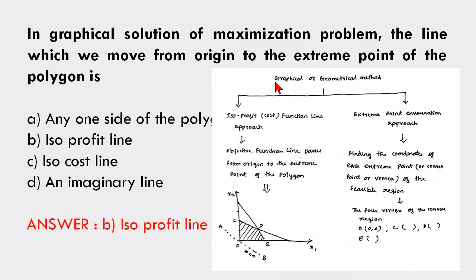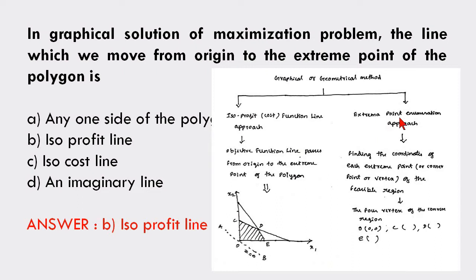The graphical method is also called the geometrical method. In this, we have two approaches: the first one is the isoprofit or cost function line approach, and the second one is the extreme point enumeration approach.